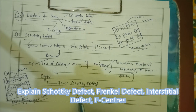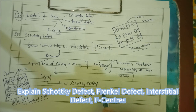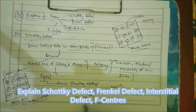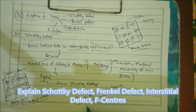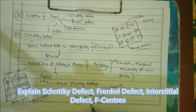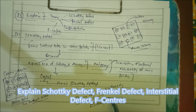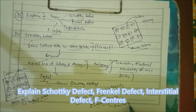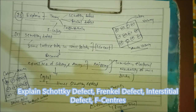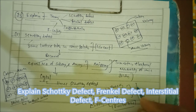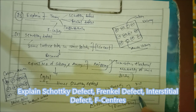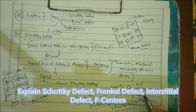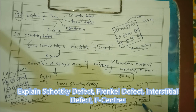This defect is shown by ionic substances in which cations and anions are of almost similar sizes. Examples include KCl, NaCl, CsCl, and AgBr — these are the ionic compounds which show Schottky defect.